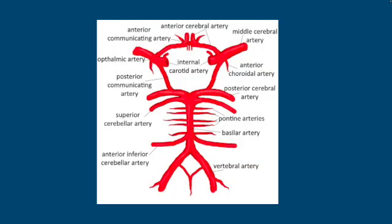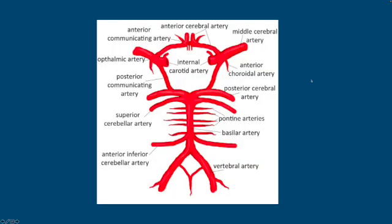So let's quickly review some vascular anatomy. This is a schematic of the Circle of Willis, which you've probably all seen before early in your anatomy training. And basically what I want to point out here is that the anterior circulation is supplied by the internal carotid arteries.